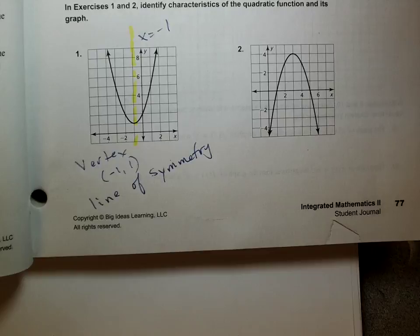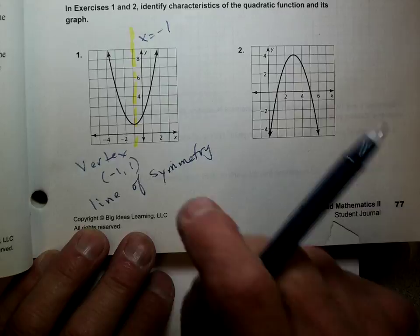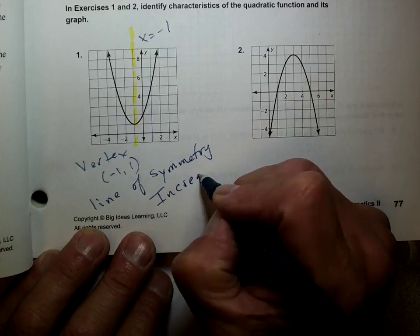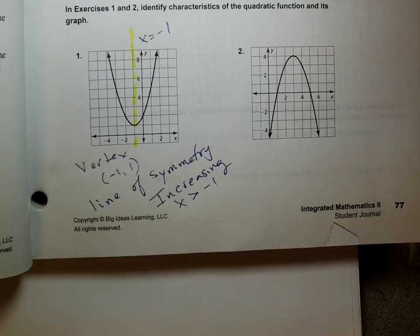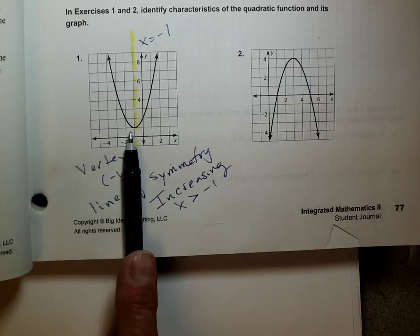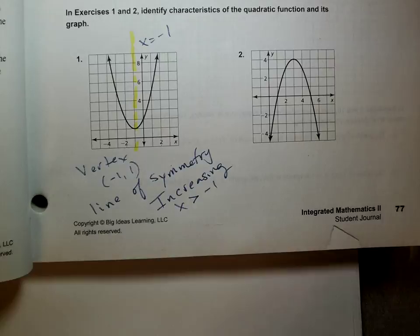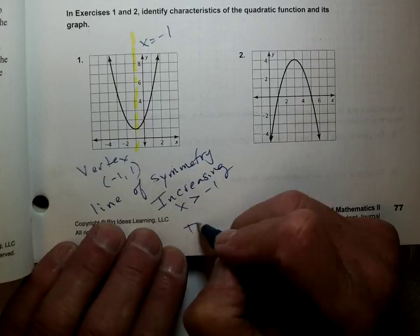It's going to be increasing from negative one — it goes uphill from x greater than negative one. On the other side, it really is coming downhill — it's decreasing from x less than negative one. Right here at the vertex, it's neither increasing nor decreasing — it's just at the bottom.